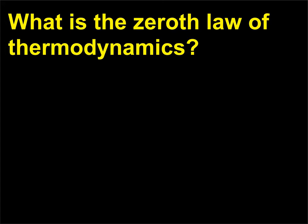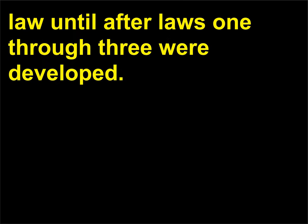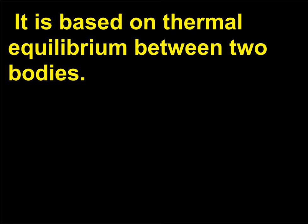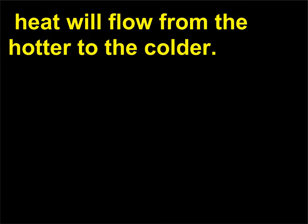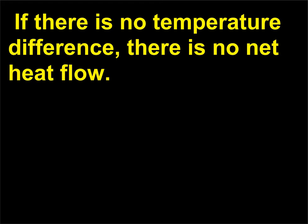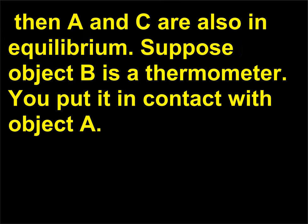What is the Zeroth law of thermodynamics? The Zeroth law is so obvious that it wasn't added as a law until after laws 1 through 3 were developed. It is based on thermal equilibrium between two bodies. If two objects have different temperatures, heat will flow from the hotter to the colder. If there is no temperature difference, there is no net heat flow — they will be in thermal equilibrium. The Zeroth law states that if objects A and B are in equilibrium and B and C are in equilibrium, then A and C are also in equilibrium.